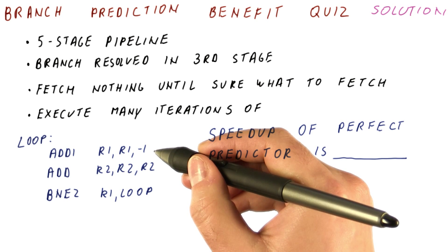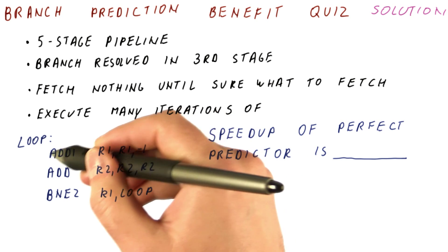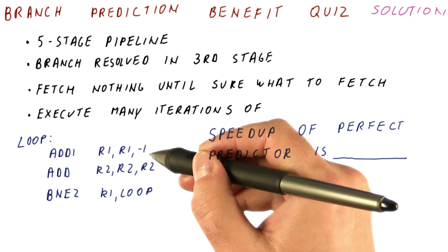There is a trick to this: when we fetch the adi here, we don't know if it is a branch, so we are not sure what to fetch in the next cycle. When the adi moves to the decode stage, at the end of that cycle, we know that it's not a branch.